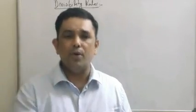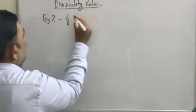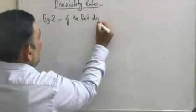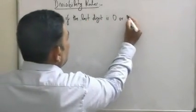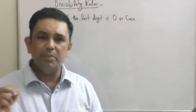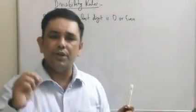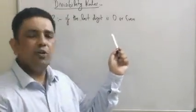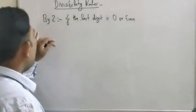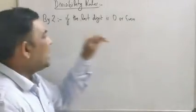A number is divisible by two if the last digit is zero or even. Now, why we say zero or even is because in mathematics we still do not have absolute clarity with regard to whether zero standalone is an even digit or not. Therefore, if a number has the last digit as zero or even, it is going to be divisible by two.